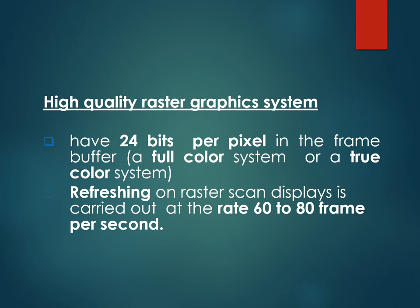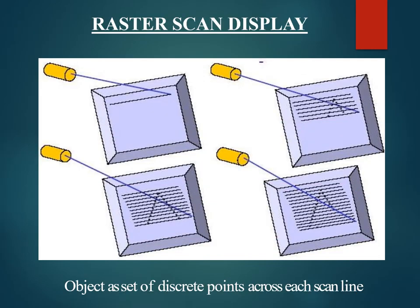Refreshing on a raster scan display is carried out at a rate of 60 to 80 frames per second. The figure shows how a raster scan image is drawn line by line and then displayed as a set of discrete points.